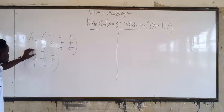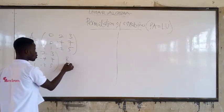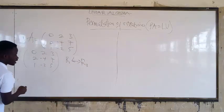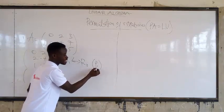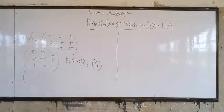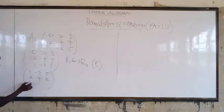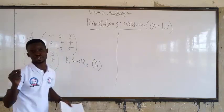Since we have a 0 in the pivot position, we swap row 1 and row 3. So let's swap row 1 interchanging with row 3, so that we can get past that 0. When you swap it, that becomes your first permute.